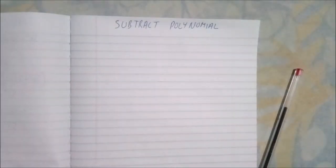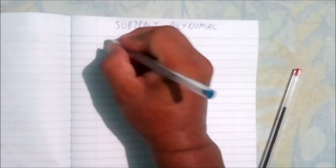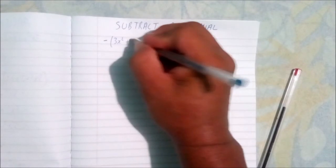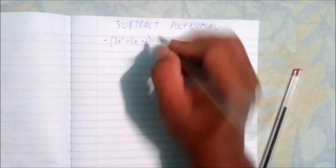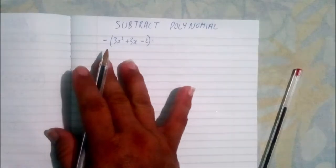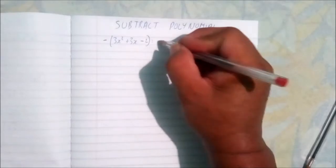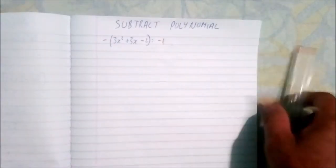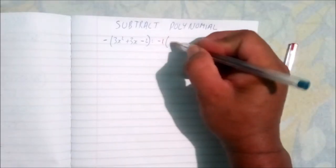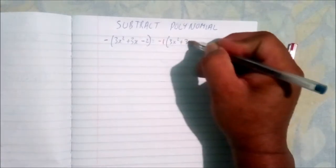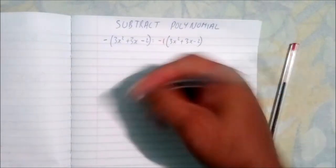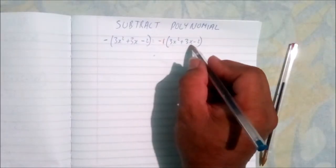In this part we'll be subtracting polynomials using the distributive law. If we have a negative sign in front of a bracket, such as negative (3x squared plus 3x minus 2), we apply the distributive law. There is actually a negative one in front, and we're going to put whatever is in the bracket back again.